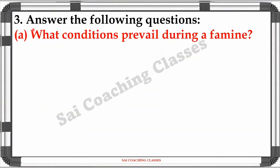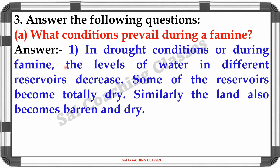Question 3 - Answer the following questions. A: What conditions prevail during a famine? Answer: During a famine, the level of water in different reservoirs decreases. Some of the reservoirs become totally dry. Similarly, the land also becomes barren and dry.